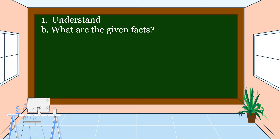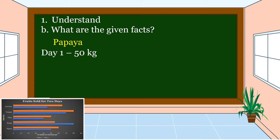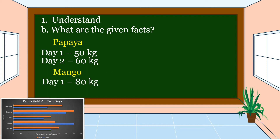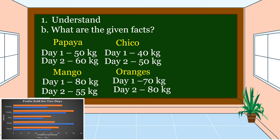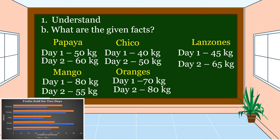As we can see in the graph, the given facts are: papaya — Day 1: 50 kg, Day 2: 60 kg; mango — Day 1: 80 kg, Day 2: 55 kg; chico — Day 1: 40 kg, Day 2: 50 kg; oranges — Day 1: 70 kg, Day 2: 80 kg; and lanzones — Day 1: 45 kg, Day 2: 65 kg. These are the given data as we can see in the graph.